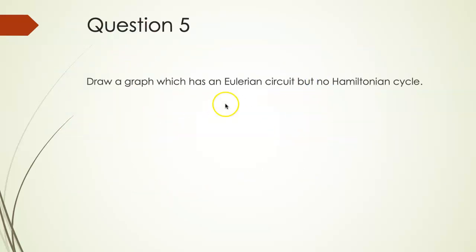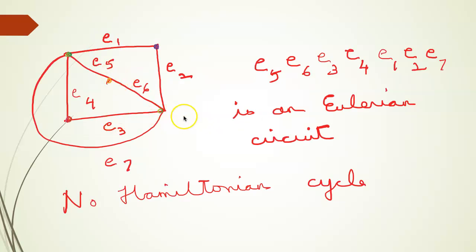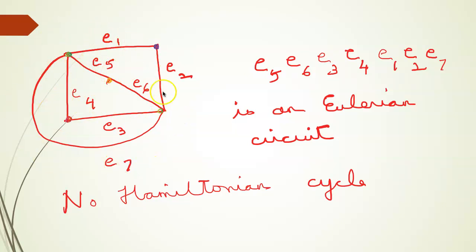Draw a graph which has an Eulerian circuit but no Hamiltonian cycle. The Eulerian circuit starts with E5, then E6, E3, E4, E1, E2, E7, and returns back to E5. This Eulerian circuit covers all the edges of the graph, but you cannot find a cycle which covers all the vertices of the graph. Hence, there is no Hamiltonian cycle.